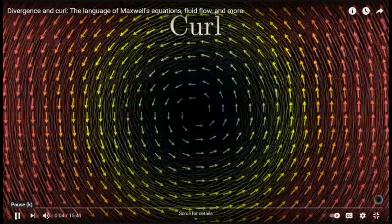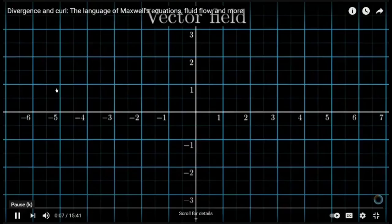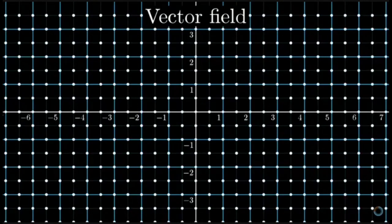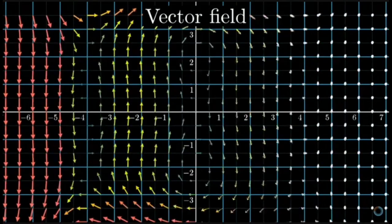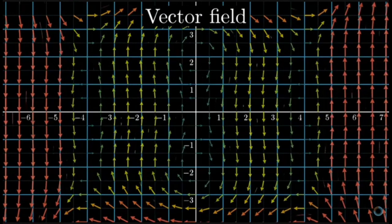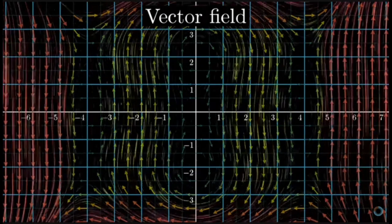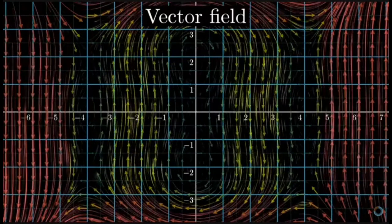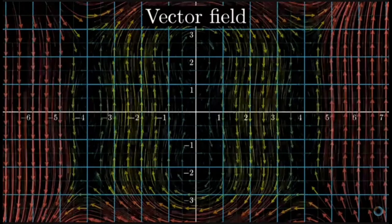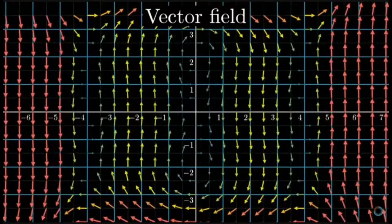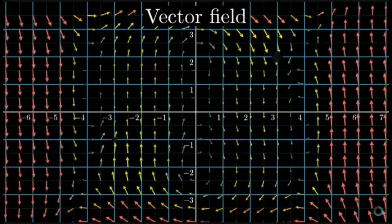To make sure we're all on the same page, let's talk about vector fields. A vector field is what you get when you associate each point in space with a vector — some magnitude and direction. Those vectors might represent velocities of fluid particles, the force of gravity at many different points in space, or a magnetic field.